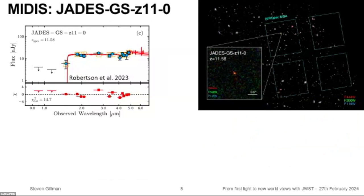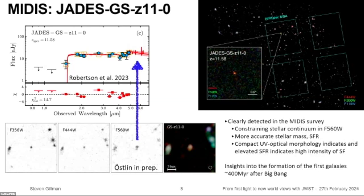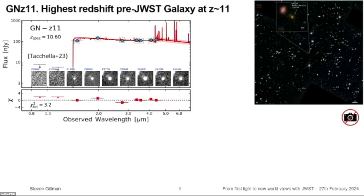As well as discovering new objects, we can look at things detected with JADES and NIRCam. One of the highest-redshift objects is the z=11.58 JADES object reported in the Robertson paper, which is clearly detected in our 5.6-micron imaging. Probing slightly longer wavelengths gives us more constraints on the stellar mass and star formation rate, and we can also constrain the morphology at 5.6 microns — though the MIRI PSF is larger than NIRCam's, so it's not a straightforward comparison.